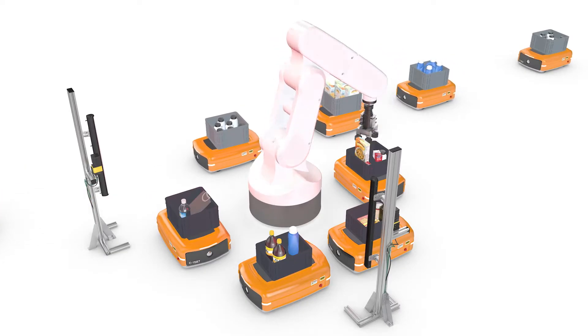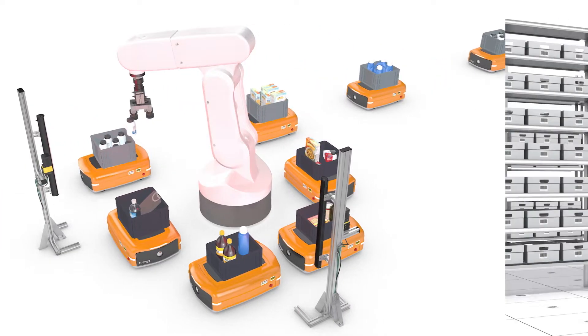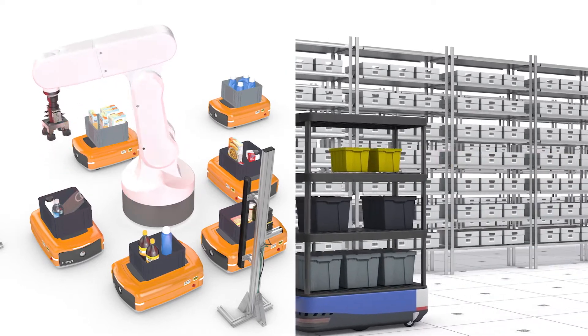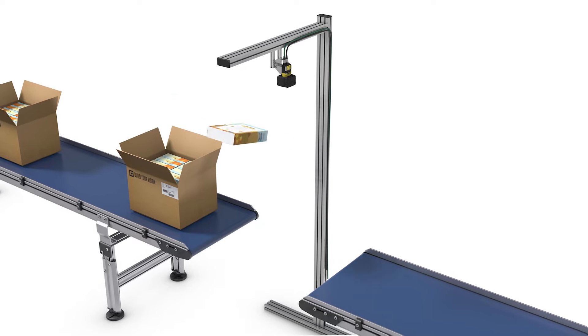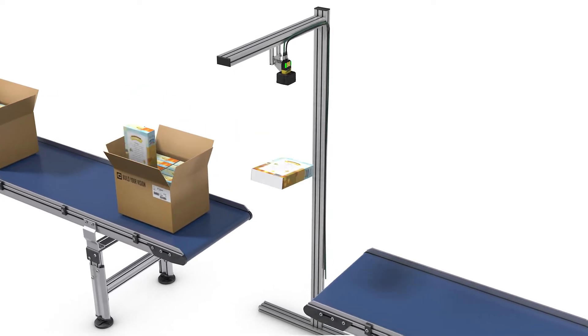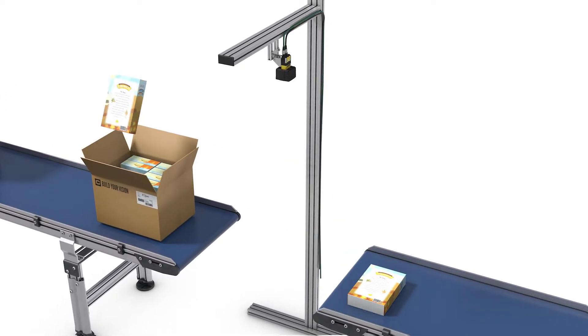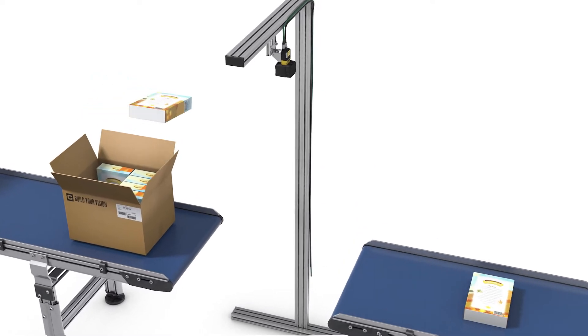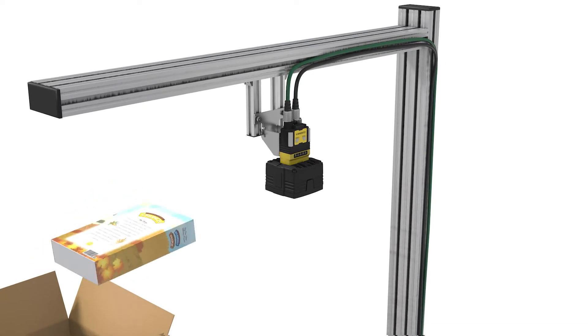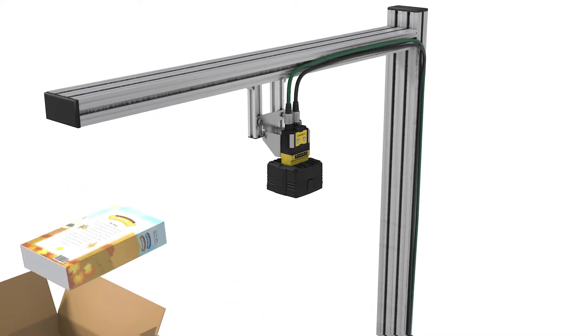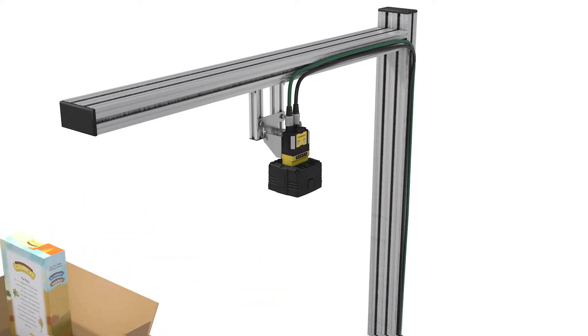Once all the order items are collected, they're ready to be packed. Someone or something must confirm the items before they're placed in the box. With a human operator, fixed mount presentation readers streamline this action, allowing them to read more codes in a shorter amount of time. Presentation readers allow for the easiest and most ergonomic code-reading action, capturing codes at a wide range of angles and distances.